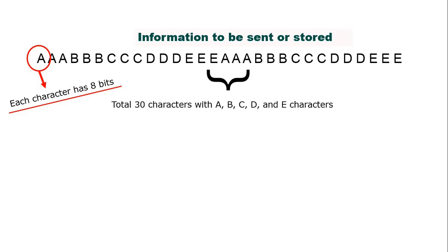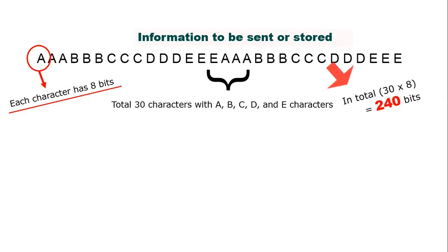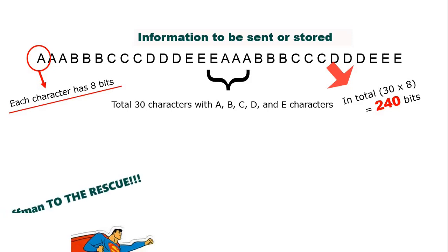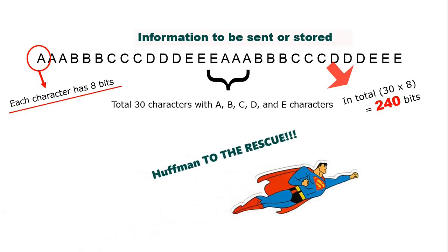So for 30 characters we need a total of 8 times 30, which is 240 bits, to send the original message over a transfer medium. Now we want to reduce this number of bits — the 240 bits — and that is where the compression method comes in: hence comes Huffman to the rescue.